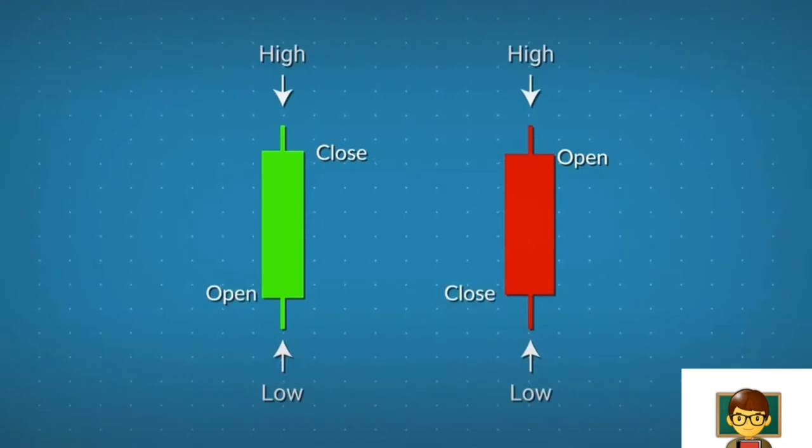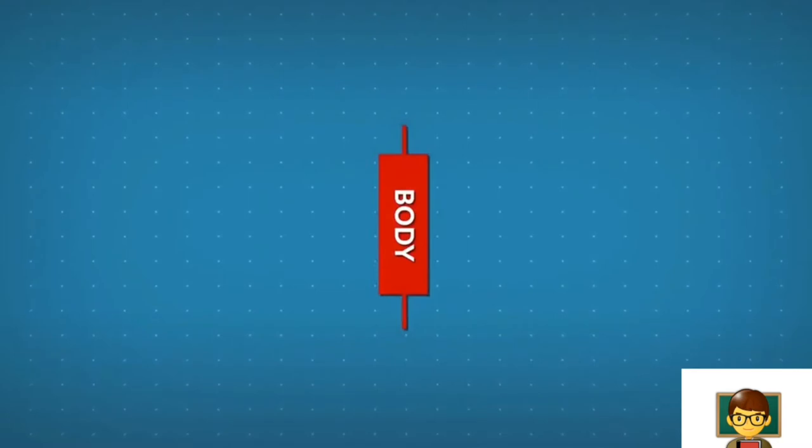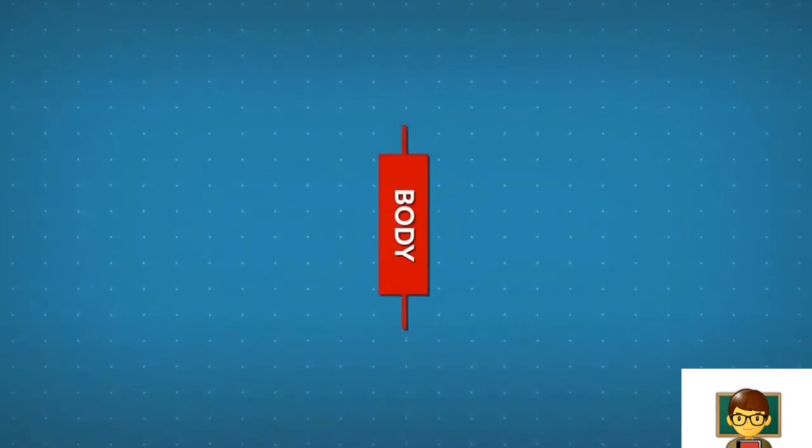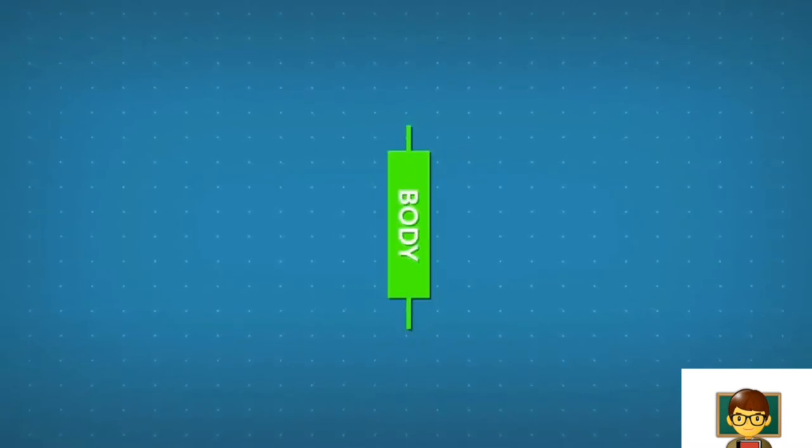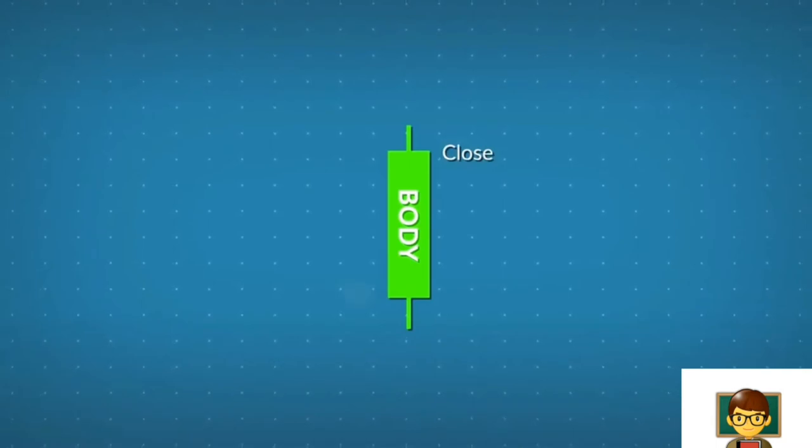The candlestick has a wide part which is called the real body. When the real body is red, it means the session's closing price was lower than the opening price. If the real body is green, it means the session's closing price was higher than the opening price.